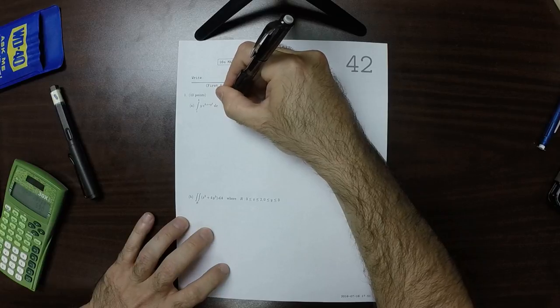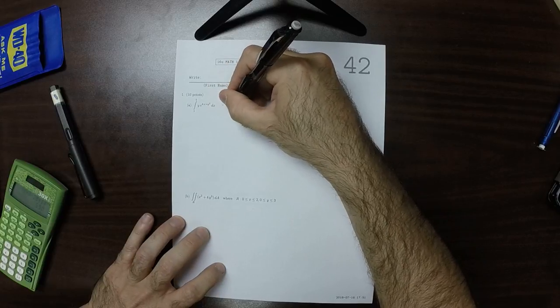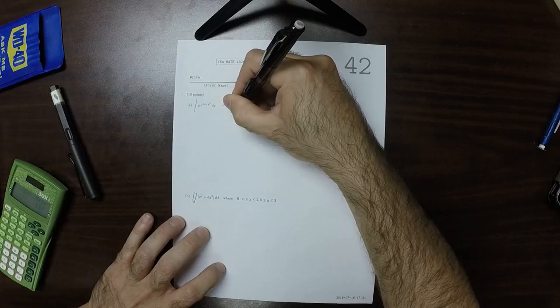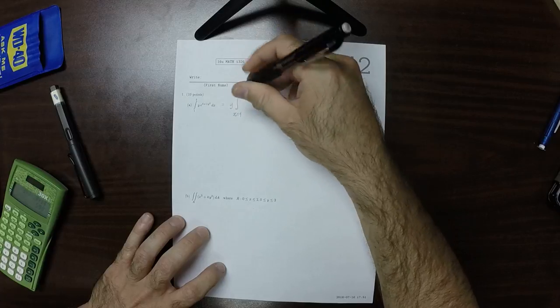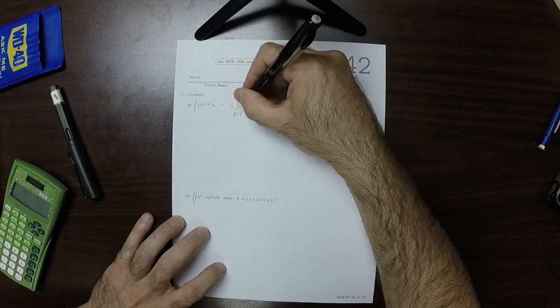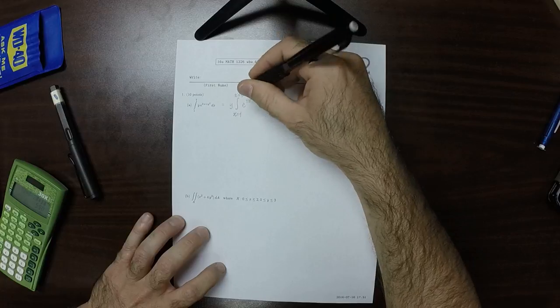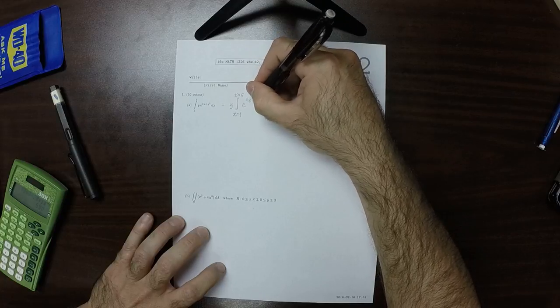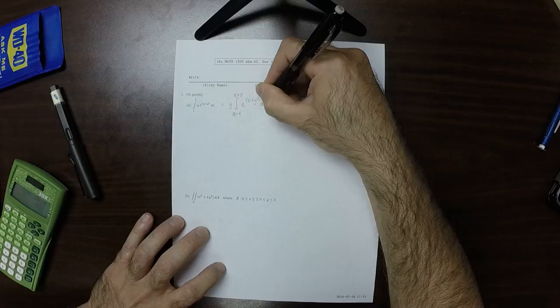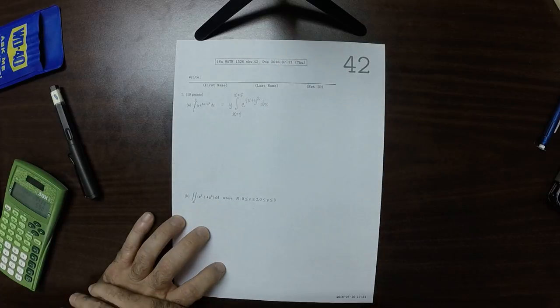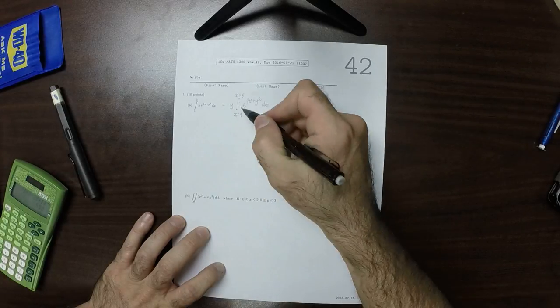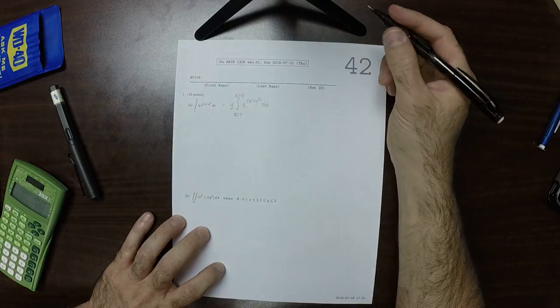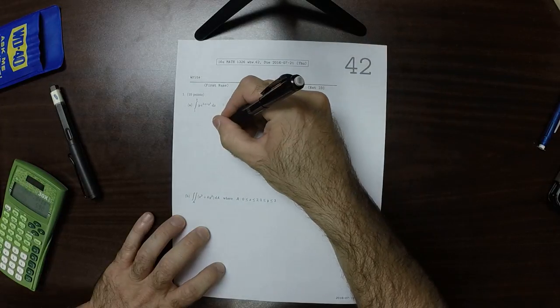So we could factor out that y, and then we would get integral, and I'm going to write x is 1 to x is 5 of e to 4x plus y squared dx. And because we're going to integrate with respect to x, and we have these constant limits, that means that in the end, the answer should not depend on x anymore.